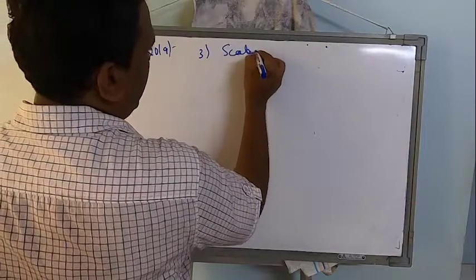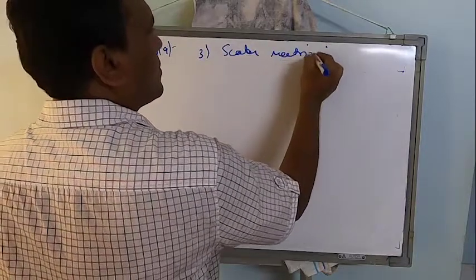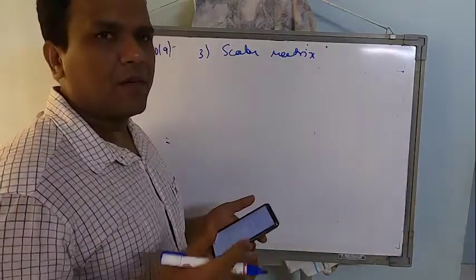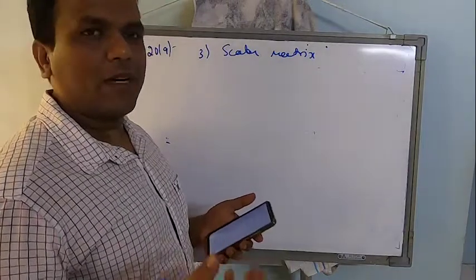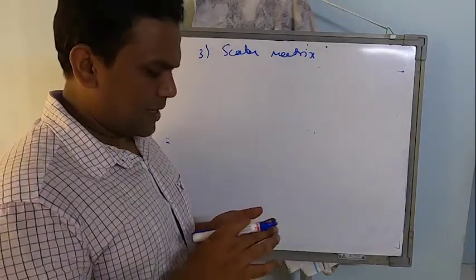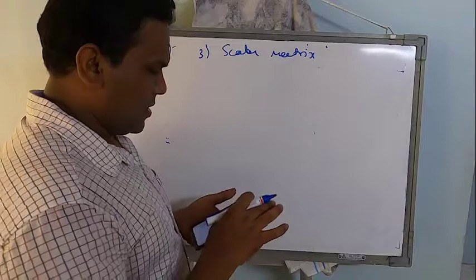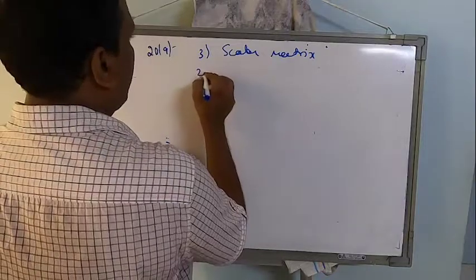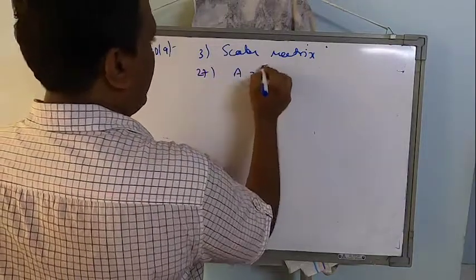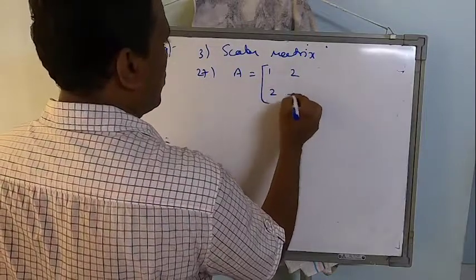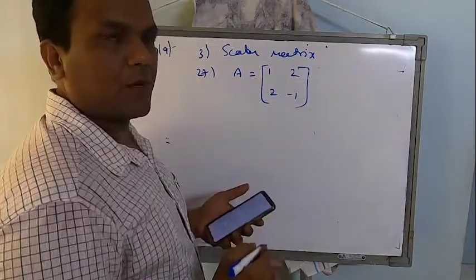In 2019, problem number 3: define scalar matrix. By this time, even if you have noticed how many times this definition has been repeatedly asked. After that, problem number 27: find inverse by using elementary transformation 1, 2, 2, minus 1.